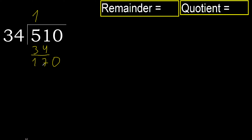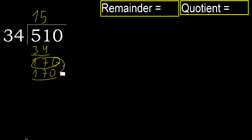Next: 170. 34 multiplied by 6 is greater. Multiplied by 5 is 170 — it's not greater. Subtract: 0.